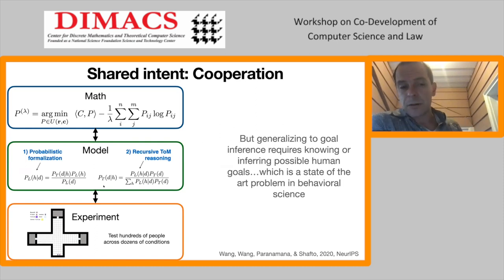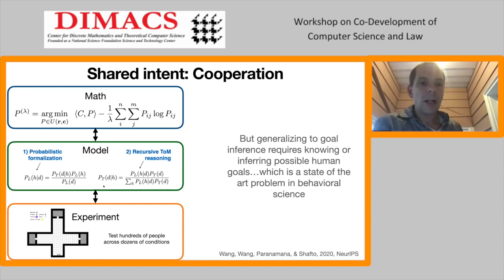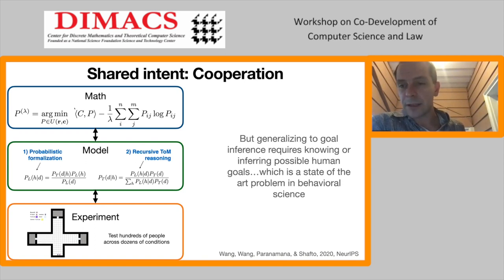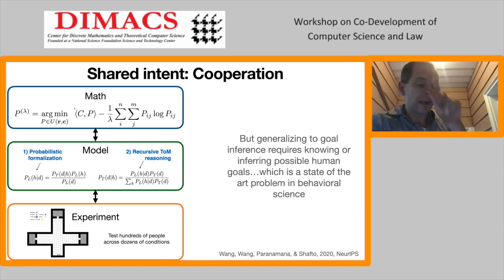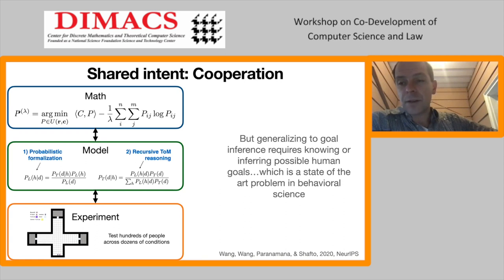You can solve this with a fixed point iteration. This model has been used extensively and has relatives in the behavioral science literature — it's closely related to the rational speech act model in language. What we've shown recently is that there's a strong mathematical foundation: the fixed point of this is also the solution to entropy-regularized optimal transport. The connection between the two is Sinkhorn scaling, which is a way of solving for entropy-regularized optimal transport plans. We can take advantage of the mathematical properties of EOT and Sinkhorn to prove certain phenomena about interactions between agents.